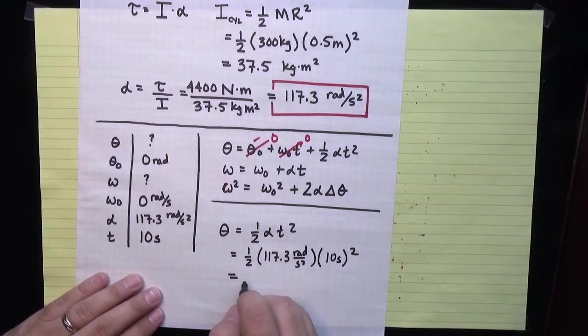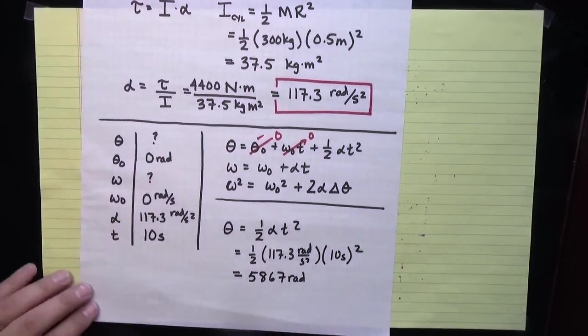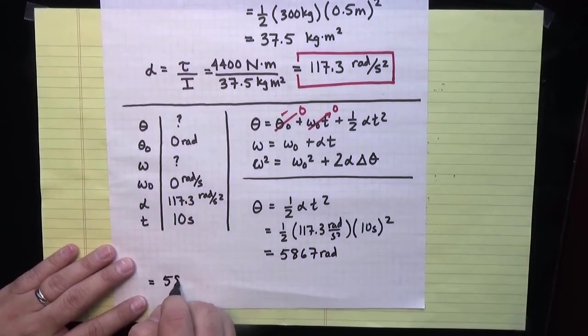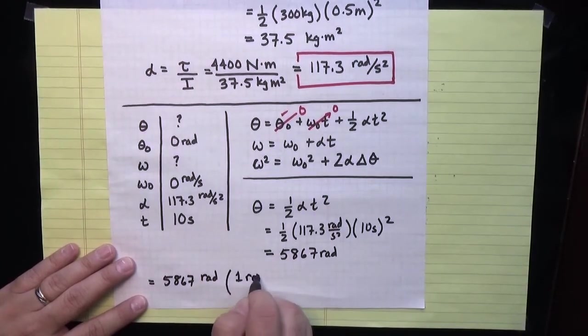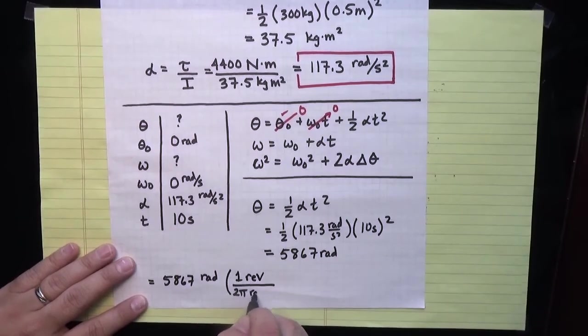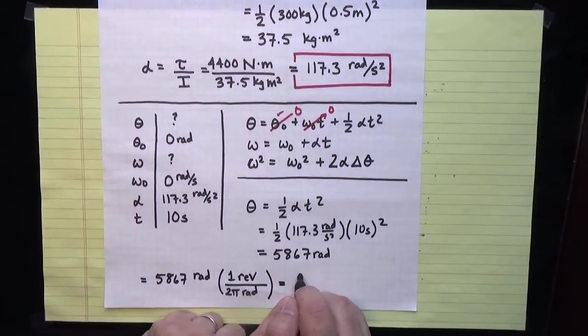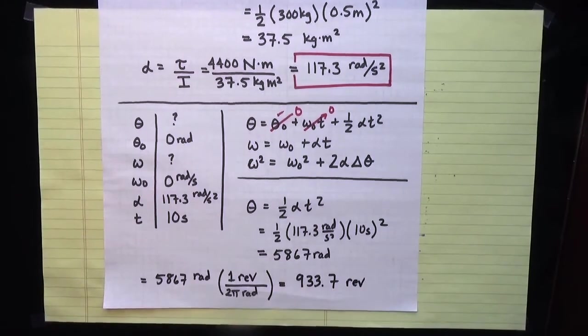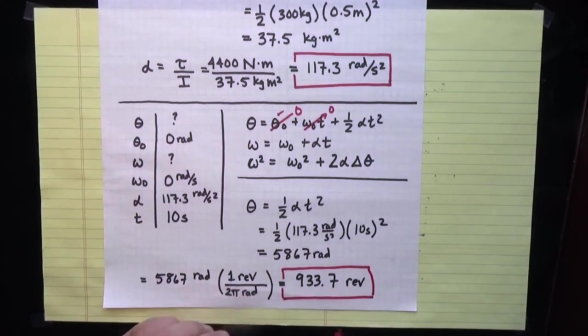We're asked to express that in revolutions, so I know that 5,867 radians times one revolution per two pi radians. If I work that out, I get that the spool makes 933.7 revolutions during the time that the drum is unspooling the tether up until the point where the satellite breaks.